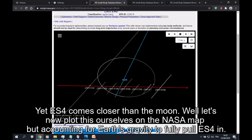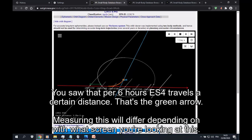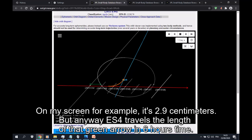It doesn't bend anywhere to account for gravity. Yet ES4 comes closer than the Moon. Well let's now plot this ourselves on the NASA map but accounting for Earth's gravity to fully pull ES4 in. You saw that per 6 hours ES4 travels a certain distance. That's the green arrow. Measuring this will differ depending on what screen you're looking at this. On my screen for example, it's 2.9 cm.